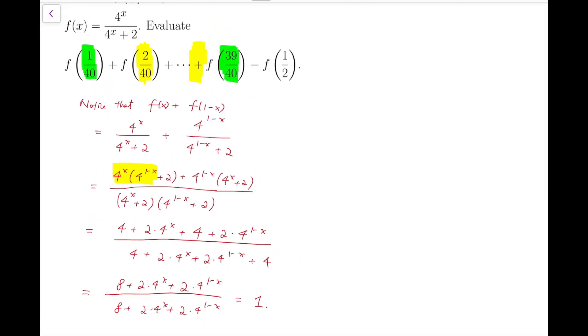So, you can say that, therefore, required sum is actually just these 39 terms you can pair up. So there should be at least 19 pairs, and the middle term should be f(20/40) minus f(1/2).